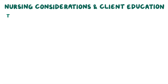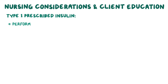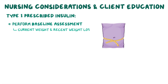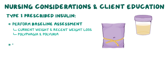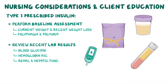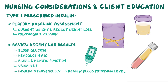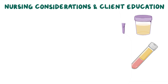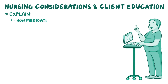When a client with type 1 diabetes mellitus is prescribed insulin, first perform a focused baseline assessment including current weight, recent weight loss, polyphagia, and polyuria. Then review recent laboratory results including blood glucose, hemoglobin A1C, renal and hepatic function, and urinalysis. If administering insulin intravenously, be sure to also review blood potassium levels.